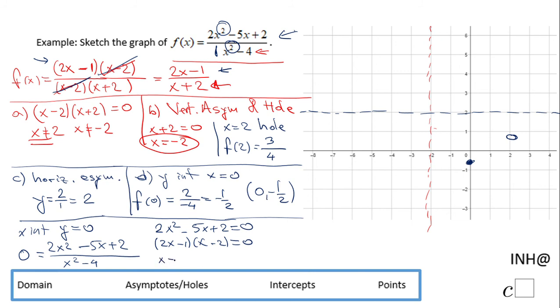x equals 2, which is not good, right? That is the hole. And we have 2x minus 1 equals 0.